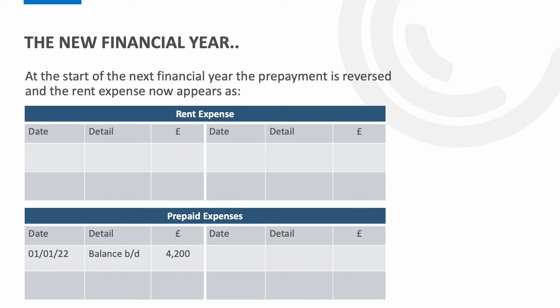So how will this look in the new financial year? At the start of the next financial year the prepayment is reversed. To do this we debit the rent expense for £4,200 and credit the prepaid expenses for £4,200. The effect of this is that we have a nil balance on our prepaid expense account and a £4,200 debit balance on our rent expense. By doing this we have successfully moved £4,200 from the previous period into the current period and our prepaid expenses are nicely tied off.